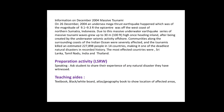Due to this massive underwater earthquake, a series of tsunami waves grew up to 30 meters, heading inland after being created by the underwater seismic activity. Offshore communities along the surrounding coasts of the Indian Ocean were severely affected. The tsunamis killed at least 227,898 people in 14 countries, making it one of the deadliest natural disasters in recorded history. The most affected countries were Sri Lanka, Tamil Nadu, India, and Thailand.